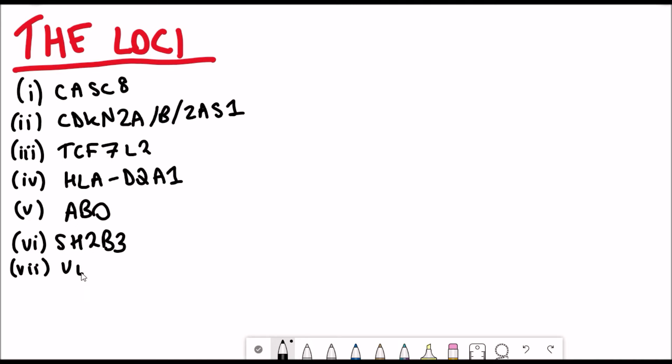The first one, which is CASC8, which stands for cancer susceptibility candidate 8, actually encodes a long non-coding RNA and is linked with breast, prostate and colorectal cancer.